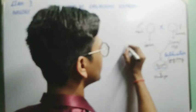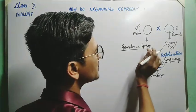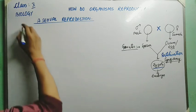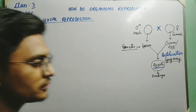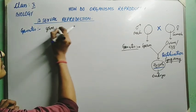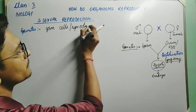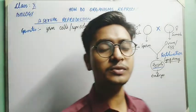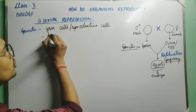In the case of asexual reproduction, there is no fusion of gametes. Gametes are the germ cells, or reproductive cells, which take part in sexual reproduction. These germ cells are haploid cells, represented by n.